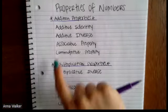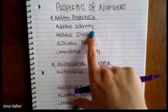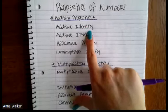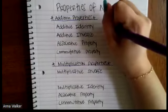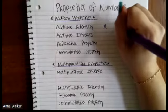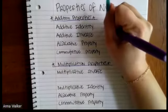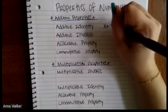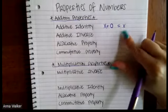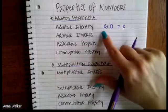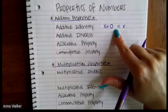So let's take a look at the first one. The first property is additive identity. Identity is when we want to keep the value of a number the same. So when we add — let's say we have the number X, and X could be any number — if we want to keep X's value the same, the property of additive identity says that X plus zero is going to be equivalent to the number we started with, X. So we're not changing the identity of X when we add zero to it.